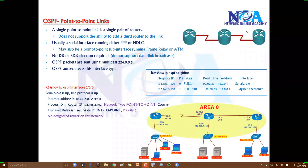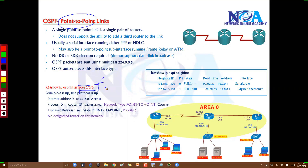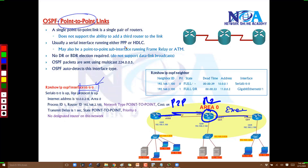We will look at OSPF on point-to-point networks. Previously we saw OSPF on broadcast networks, where we have DR and BDR elections. But when running point-to-point links — for example, serial interfaces — there is no DR or BDR election, because it is a point-to-point link and there is no broadcast. The update sent on this interface will not loop back.